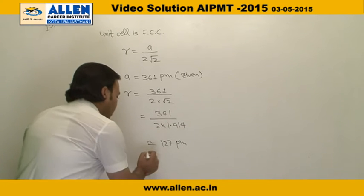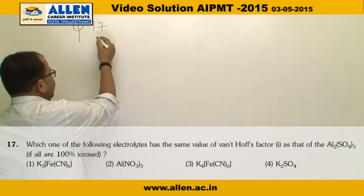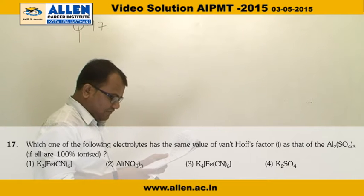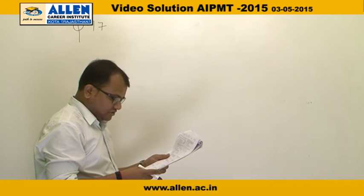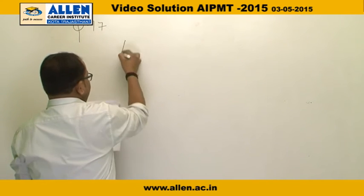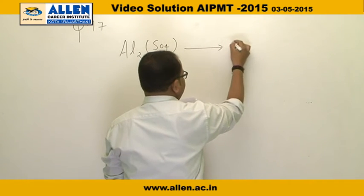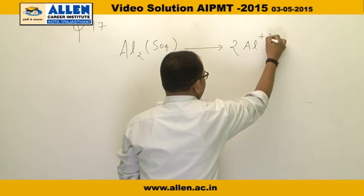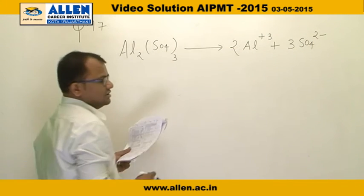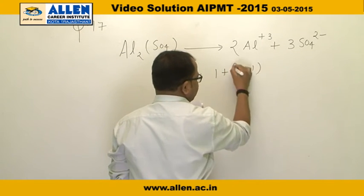After solving, the radius of one atom is 127 picometers. Hence the correct option is one. Question number 17: which electrolyte has the same value of van't Hoff factor (i) as Al₂(SO₄)₃? When Al₂(SO₄)₃ is 100% ionized, it dissociates into two Al³⁺ and three SO₄²⁻. The van't Hoff factor i = 1 + (n − 1)α.